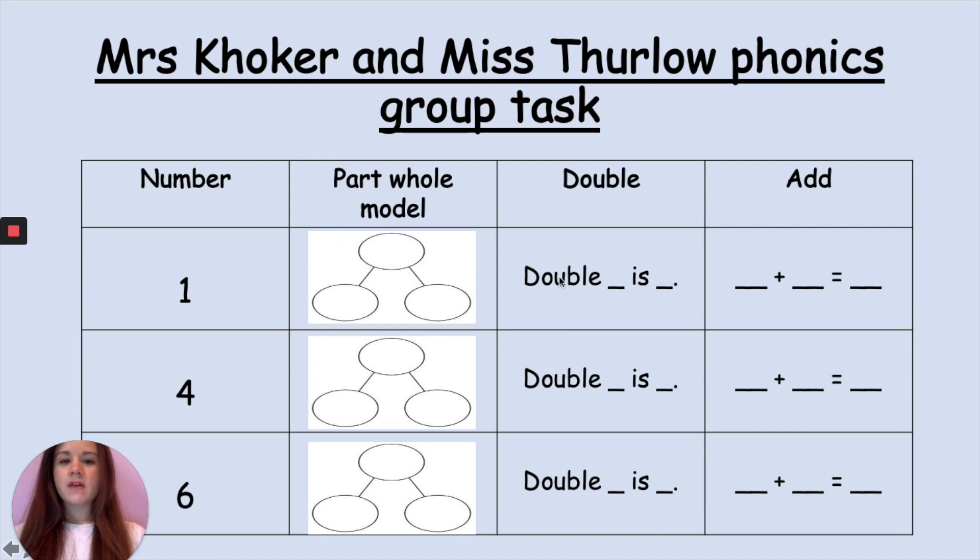Write your sentence: double 1 is something else, double 4 is something, double 6 is something else, and then write your number sentences. So if you are in Mrs. Coker and Miss Thurlow's phonics groups can you pause the video to complete this activity.